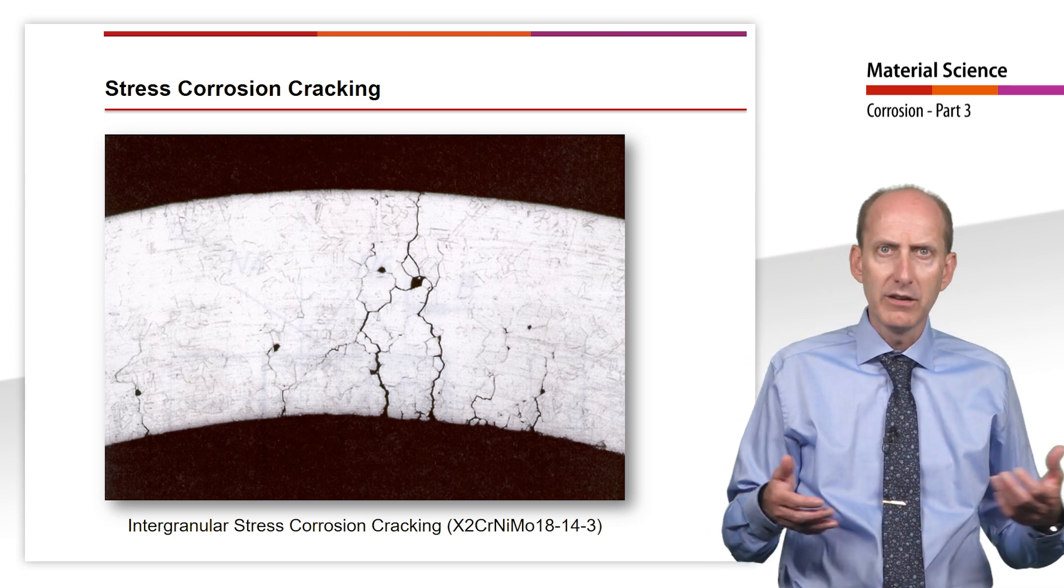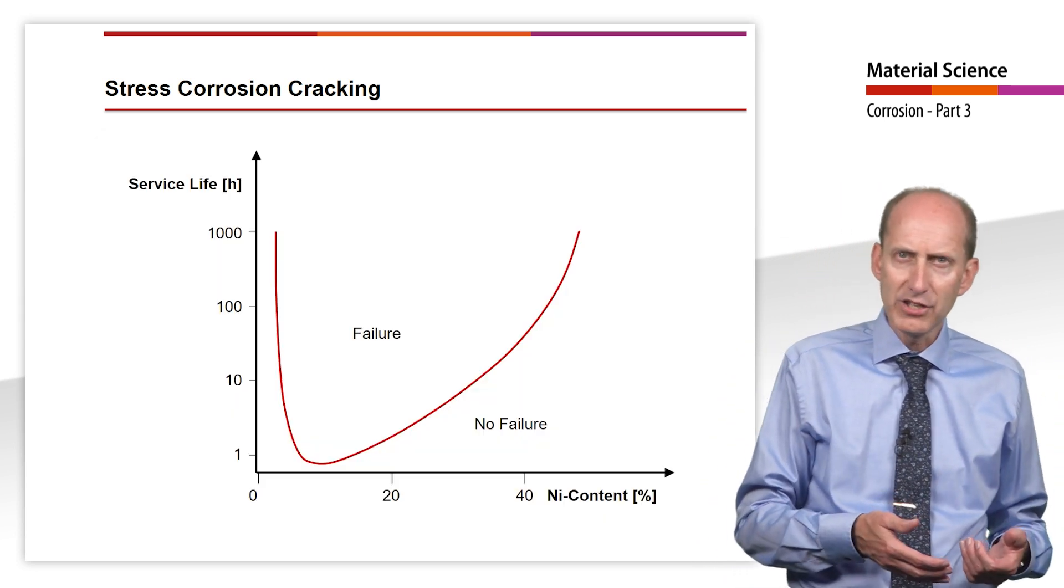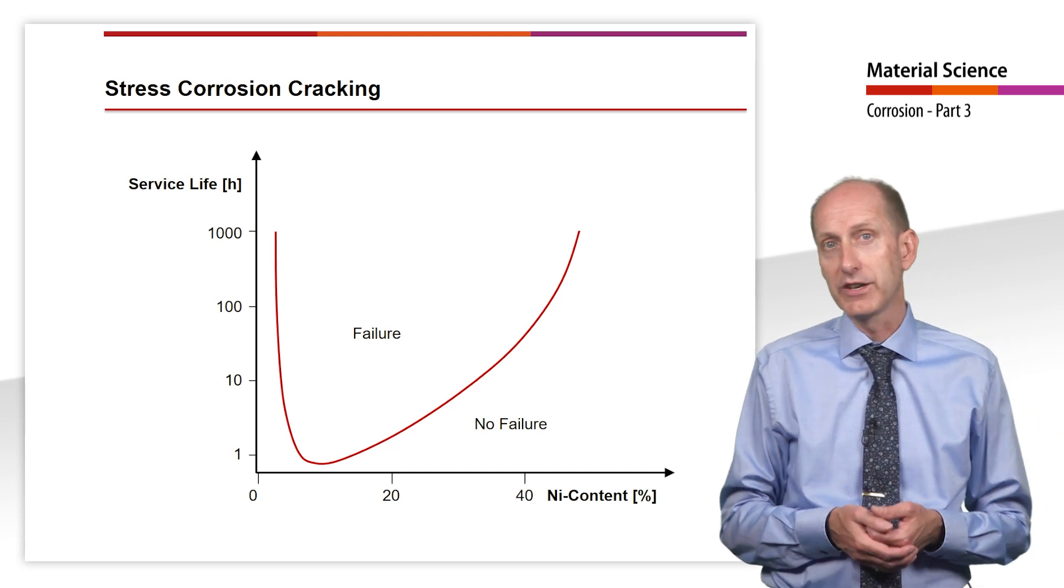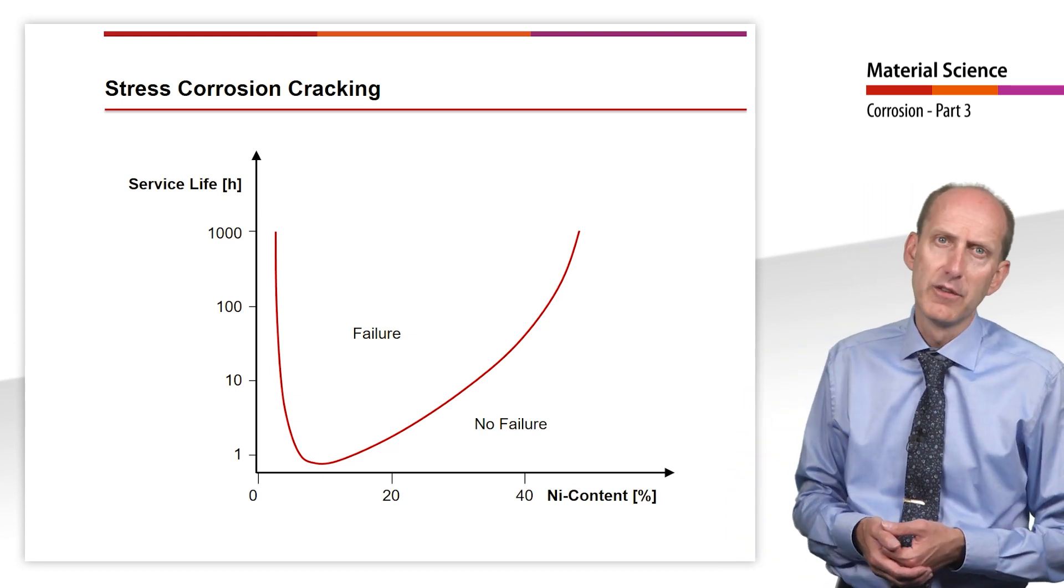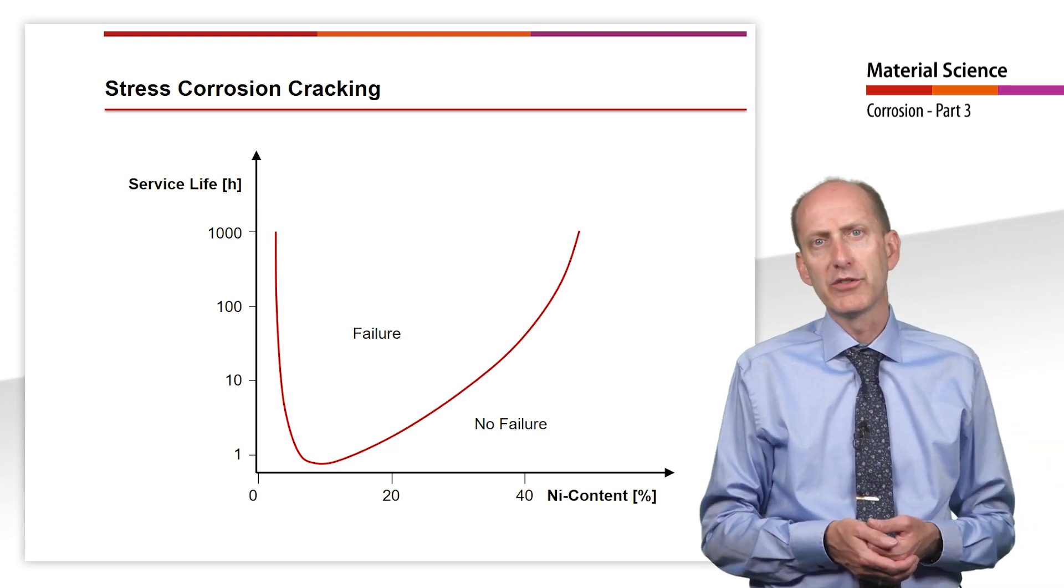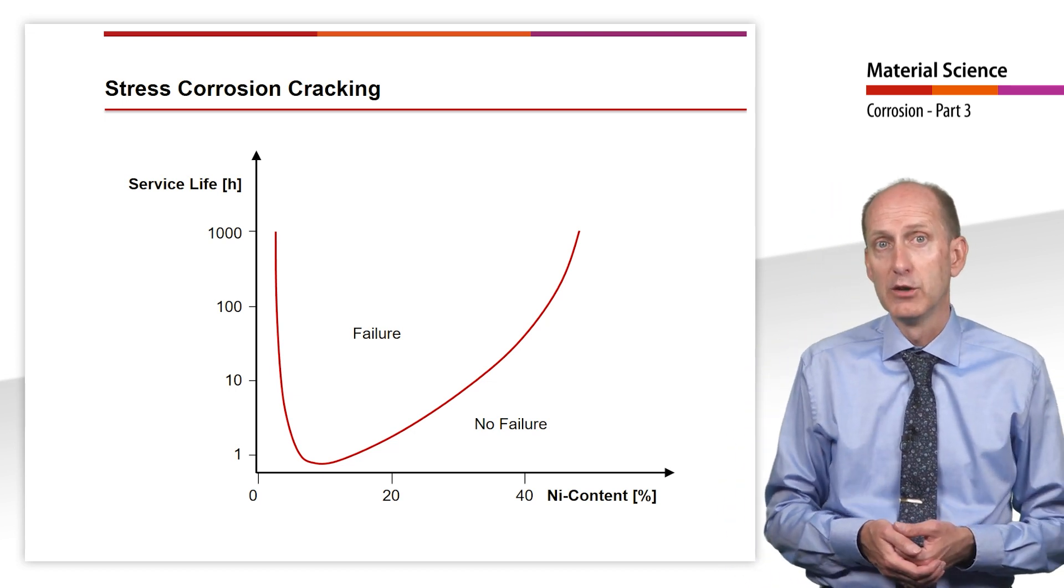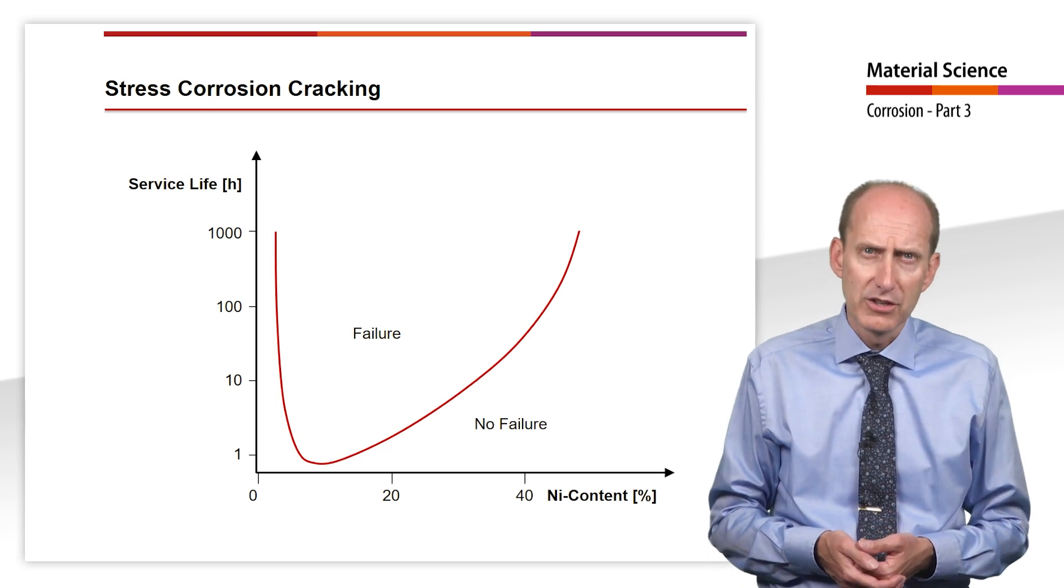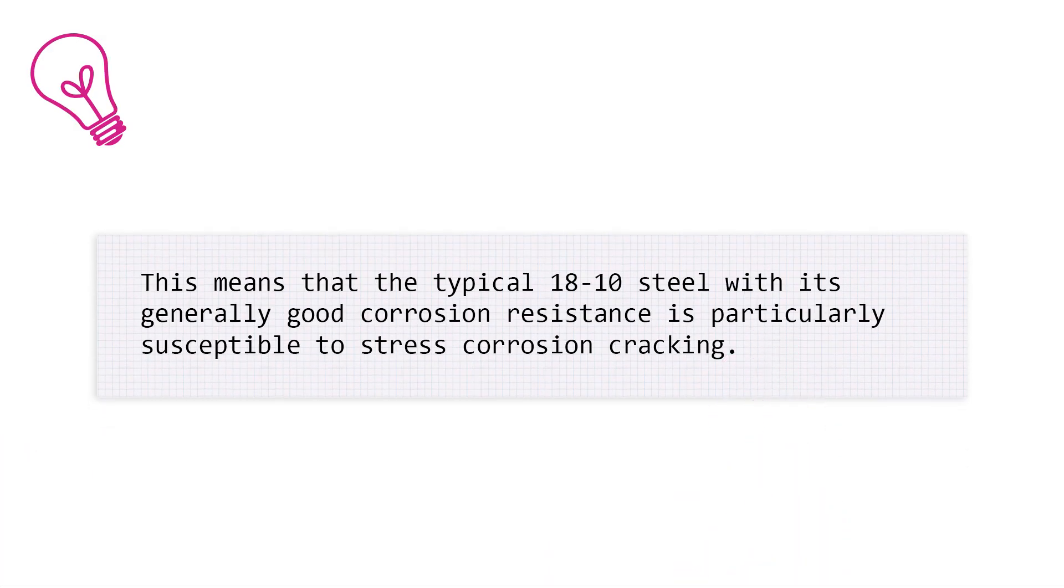But how can remedial action be taken in such cases? A clear correlation between nickel content and stress corrosion cracking susceptibility was demonstrated. The results in this graph were obtained on samples with constant chromium content of 18% and variable nickel content. We see that the measured surface life just passes through a minimum at a concentration of about 10%. This means that the typical 1810 steel with its generally good corrosion resistance is particularly susceptible to stress corrosion cracking.